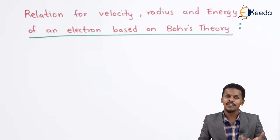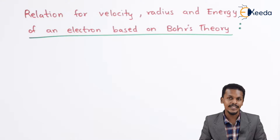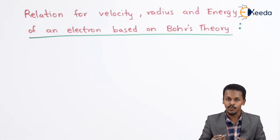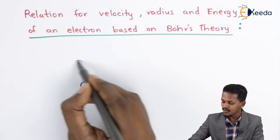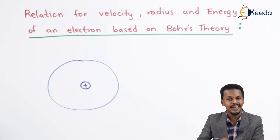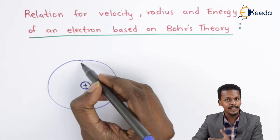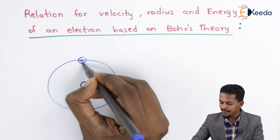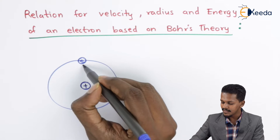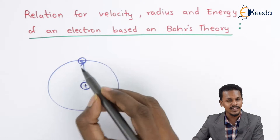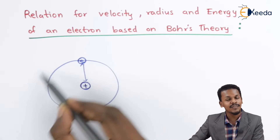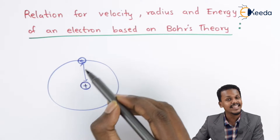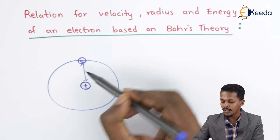In the previous topic we discussed about the postulates of Bohr's atomic theory, and we got to know that electrons revolve around a nucleus which consists of protons. The proton consists of a positive charge, and electrons revolve around it at a particular distance — that is the stationary orbit. Here we are going to talk about the radius between the nucleus and the electron, the velocity of the electron revolving around the nucleus, as well as the energy of the electron.